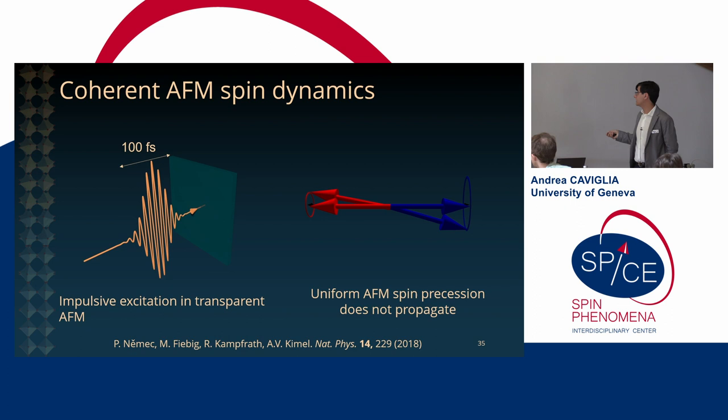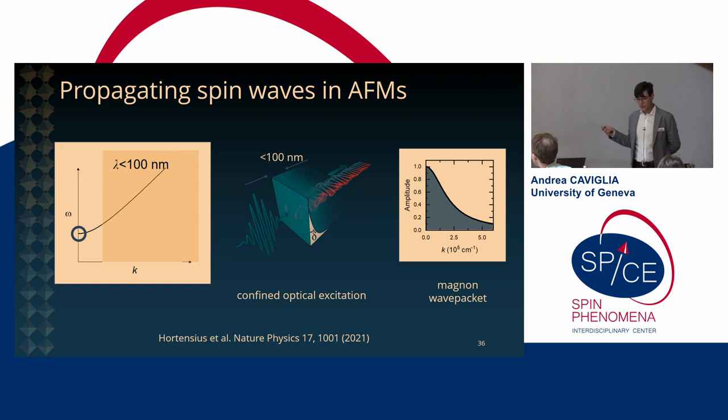However, if we choose to excite our antiferromagnets with some sharp optical resonance so typically orbital transitions we can have a situation in which the optical excitations of the material is confined over a very thin skin depth at the surface of the material. So this can be sometimes below the characteristic wavelength of excitations of spin waves and this naturally can lead to the generation of a magnon wave packet. So how does this work?